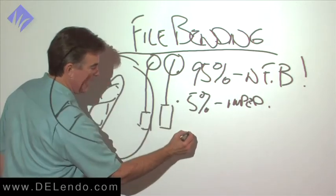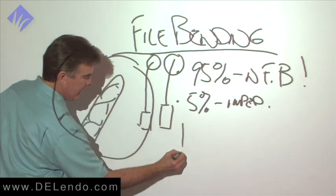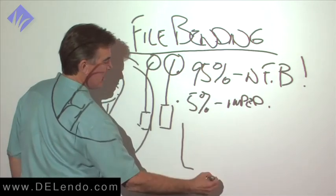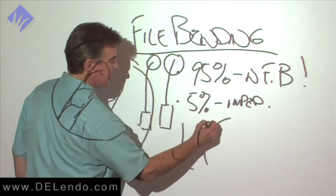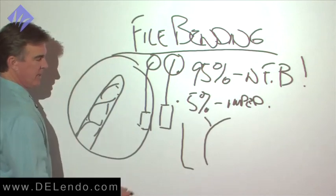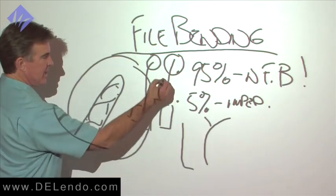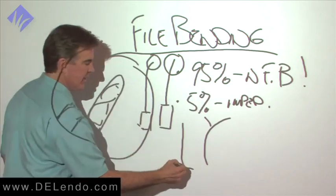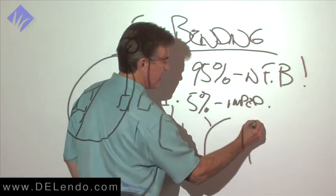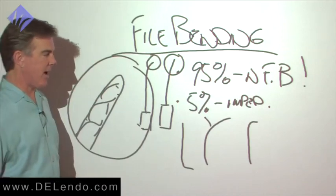When we meet an impediment, that's a canal that is bending so sharply or a curvature that has such an irregularity off of it, like a lateral canal, that our unbent files won't go around it. This kind of a bend, essentially straight, will not get us around there. What we need is we need to bend in the last 2 millimeters of the file.